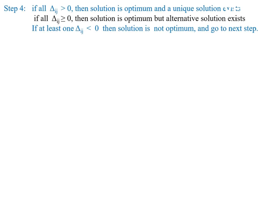Step 4: if all delta_ij > 0, the solution is optimum and unique. If all delta_ij ≥ 0, the solution is optimum but another solution exists. If at least one delta_ij < 0, the solution is not optimum and we go to the next step. Since delta_22 = −18 is negative, we must move to Step 5.